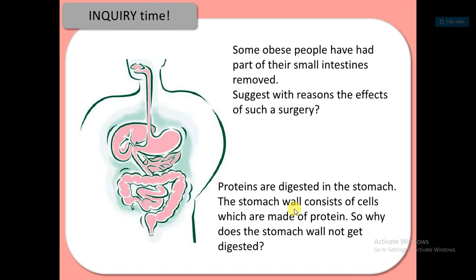Proteins are digested in the stomach, and the stomach wall consists of cells which are made of proteins. So why does the stomach not get digested? Think about it and answer the question.